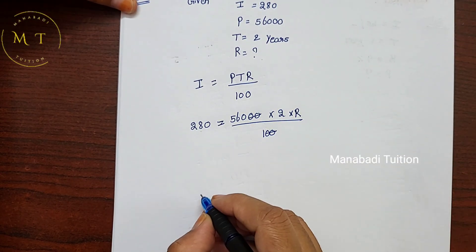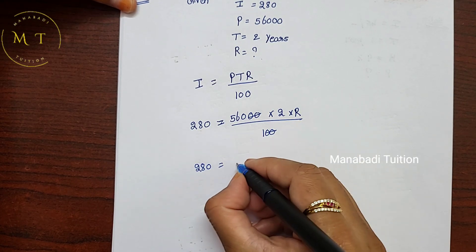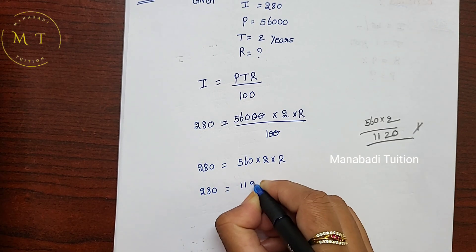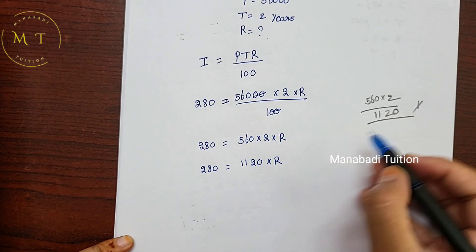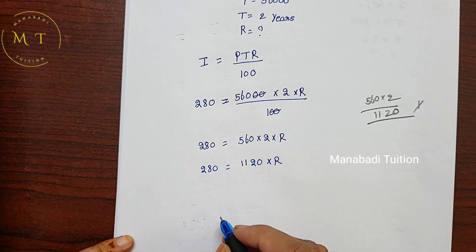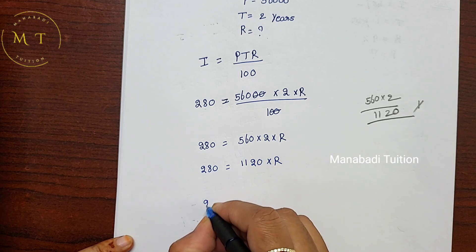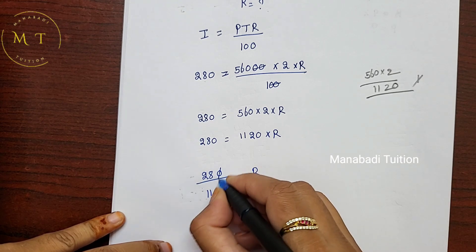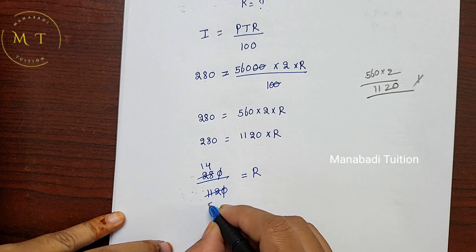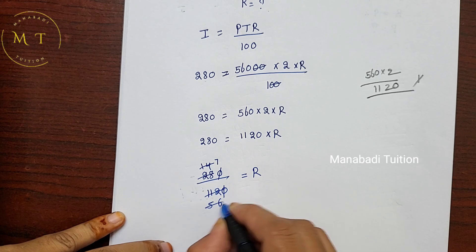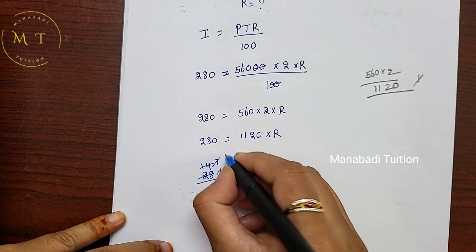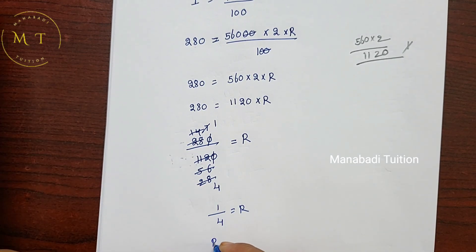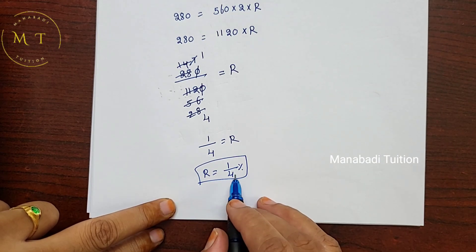Transpose: R = 280 divided by 1120. Cancel zeros: 28 divided by 112. Simplifying — 7 fours are 28, 28 fours are 112 — numerator is 1, denominator is 4. So capital R = 1 by 4, which equals 0.25%. Rate of interest is 0.25%.